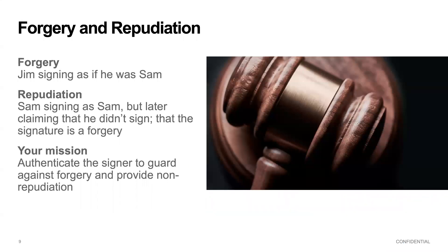Let's talk about the legal issues. There are two different issues with signatures: forgery and repudiation. Forgery is what we often think of — that's where Jim is signing the document and pretending that he's Sam. Repudiation is just as bad. That's when Sam or Samantha signed as herself but later claimed that she didn't sign, that the signature was a forgery. Your mission — and we're here to help you with that — is to authenticate the signer to guard against forgery and to provide what's often called non-repudiation.